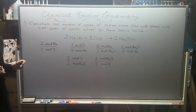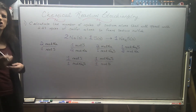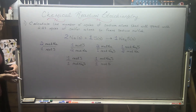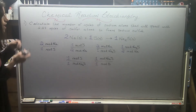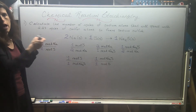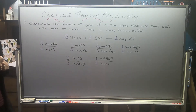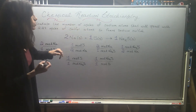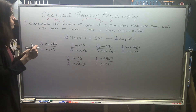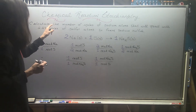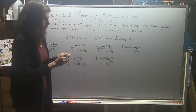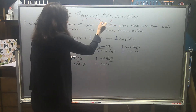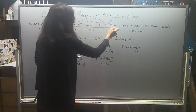I usually create my mole-to-mole conversion factor on the fly, and we'll start seeing that as we get more into it. But I want everybody to start thinking about how you can pull out these conversion factors from a balanced equation. Let's read the problem: calculate the number of moles of sodium atoms. At the end of the day, what they want is the number of moles of sodium.